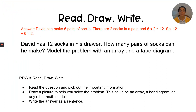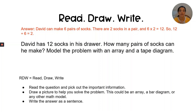Answer: David can make six pairs of socks. There are two socks in a pair, and six times two equals twelve. So twelve divided by six equals two. That's an example of an excellent answer with lots of good information, and it pretty much matches what I said. Remember, your answer doesn't have to have the exact same wording as mine — just do the very best you can.